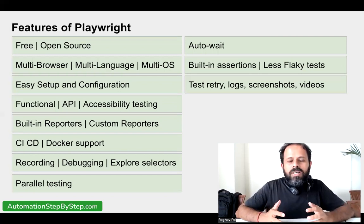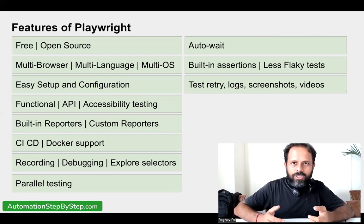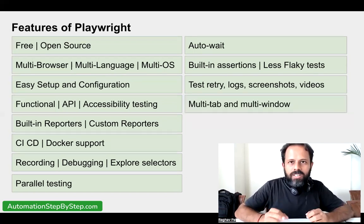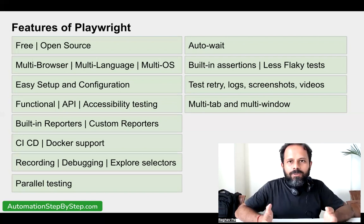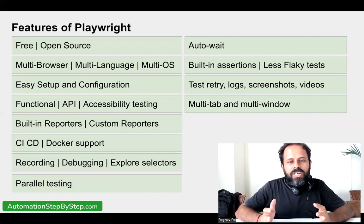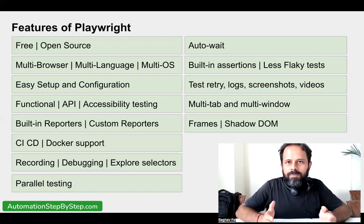Playwright has options for retry logic to retry failed tests. We have options to see and generate logs, and to capture screenshots and videos of our test execution. A very important feature is support for multi-tab and multi-window execution — when a link or button opens a page in a new window or tab, many automation tools don't support this, but Playwright does. Playwright can also handle iframes and Shadow DOM objects, which is very useful in automation.